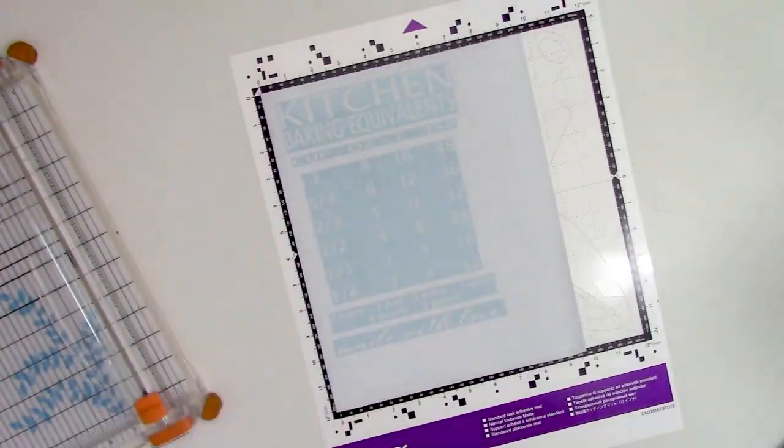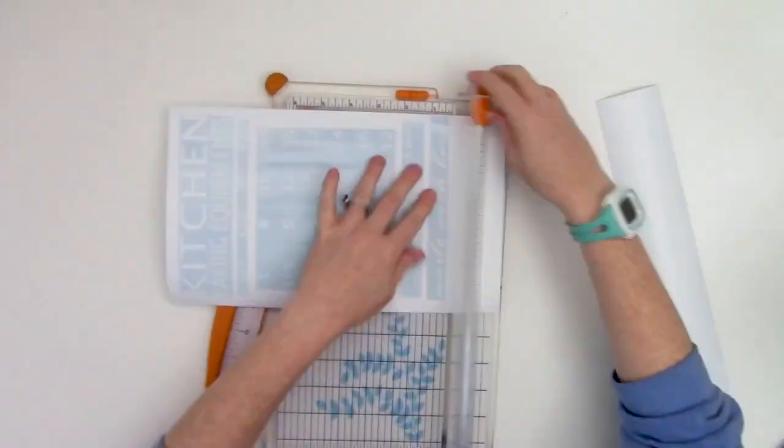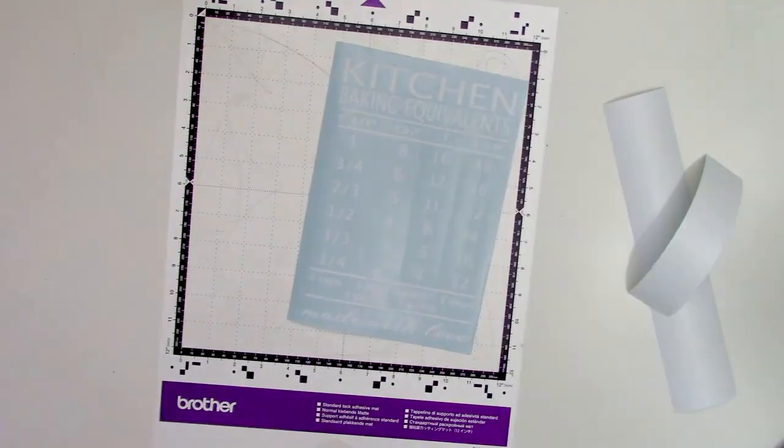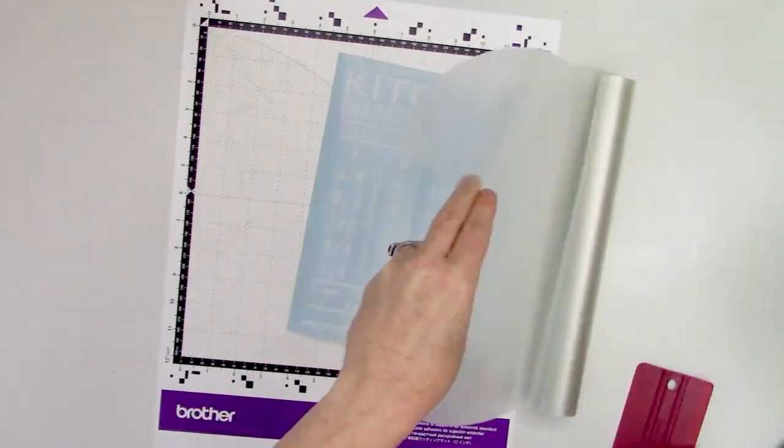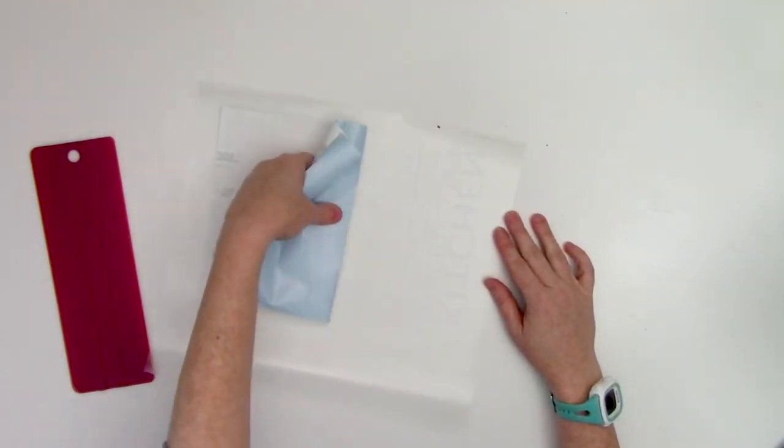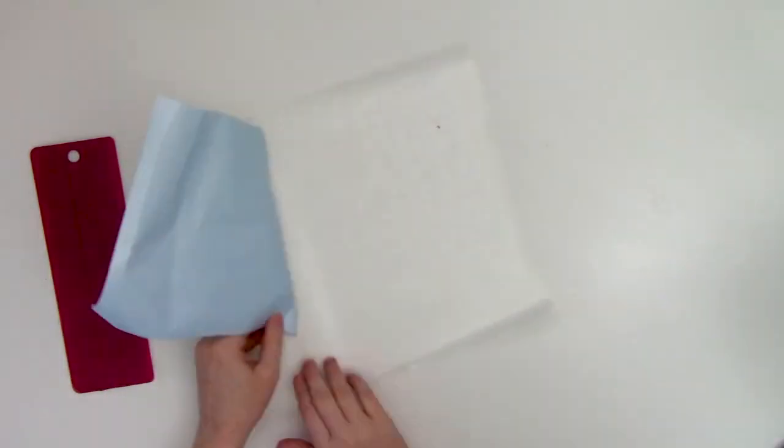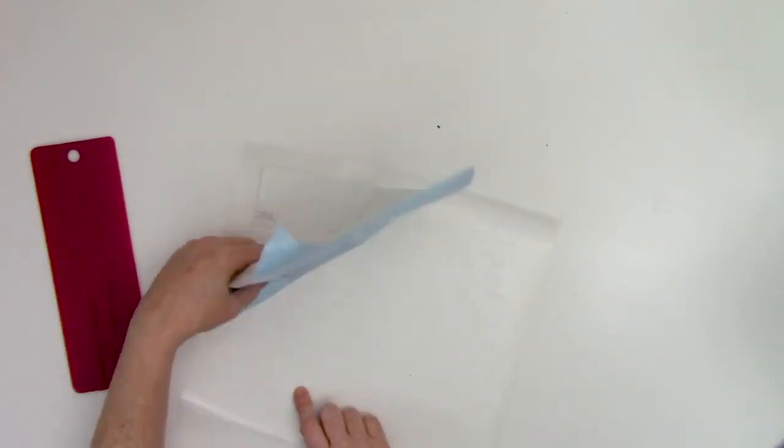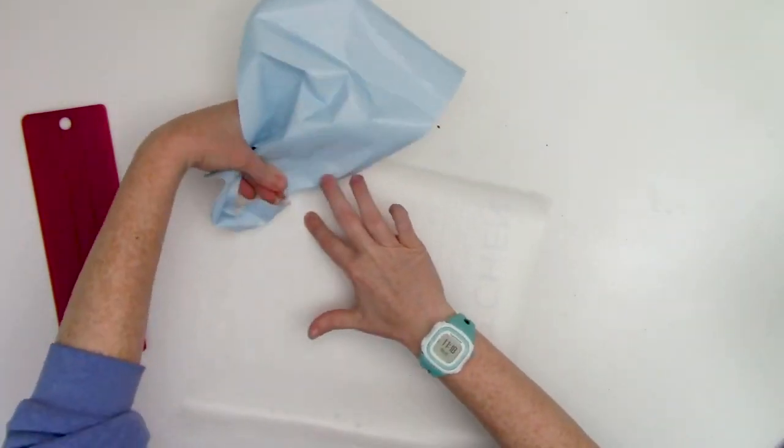You're going to need a good baking measurement conversion design. This one we're using is from SoFonsies Farmhouse SVG and font bundle, a bundle which is back for one day only throwback Thursday. Click the link in the video description to grab this bundle before it's gone again.